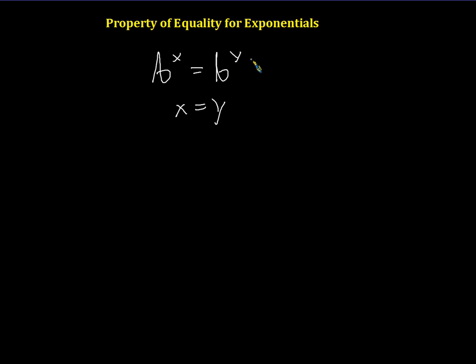This is known as the property of equality for exponentials. You can take this as a given. If you have two powers that are equal to each other and they have the same base, their exponents must be equal. And by the way, it works the other way around as well.